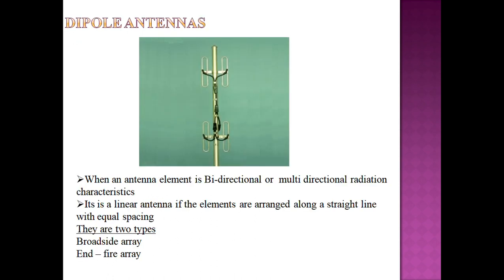This is the dipole antenna — it has two dipoles. There are two types: broadside array and end-fire. Because it is a dipole antenna, it has bi-directional or multi-directional radiation characteristics.